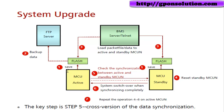For system upgrade, the procedure is as follows. Step one: first, save data from MCU RAM to Flash — this applies to both the active and standby MCU cards. Step two: save and backup data from the FTP server.